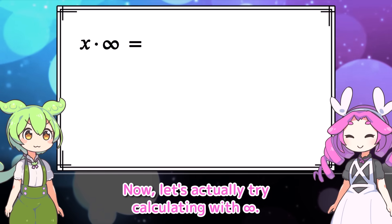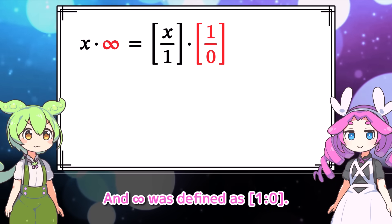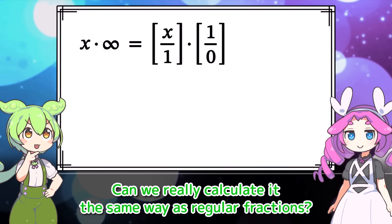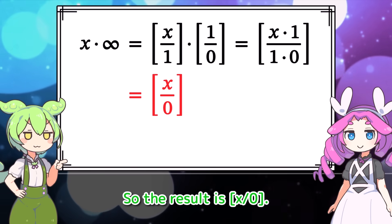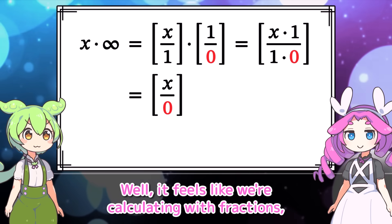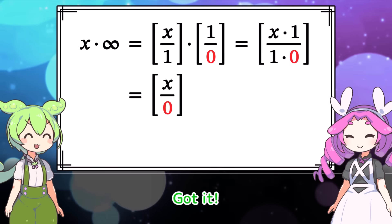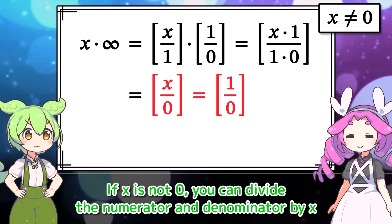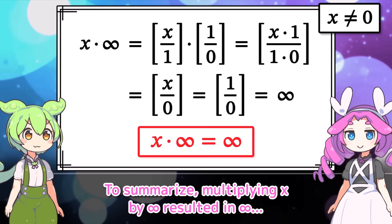Now let's actually try calculating with infinity. If we multiply a real number x by infinity, we first identify x with the ratio x to 1, and infinity was defined as 1 to 0. Treating them as regular fractions, we multiply the numerators and multiply the denominators, giving a result of x over 0. We're calculating with zeros in the denominators, but in reality we're just computing a new ratio from two ratios — not actually dividing by 0. Assuming x is not 0, you can divide numerator and denominator by x, the ratio remains the same, and this matches the definition of infinity. So multiplying x by infinity results in infinity.